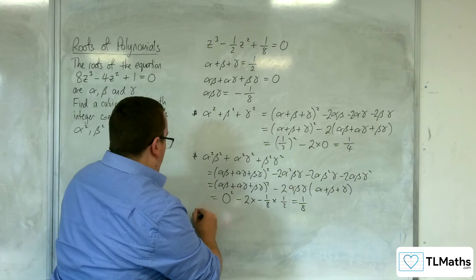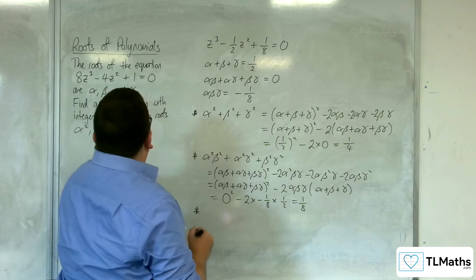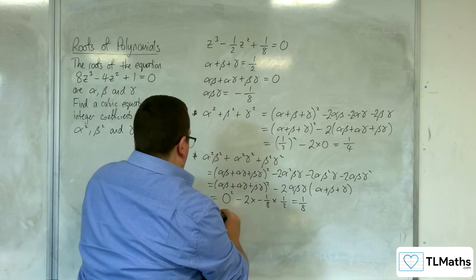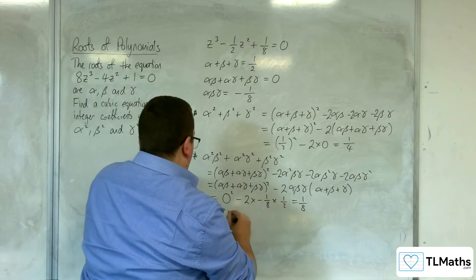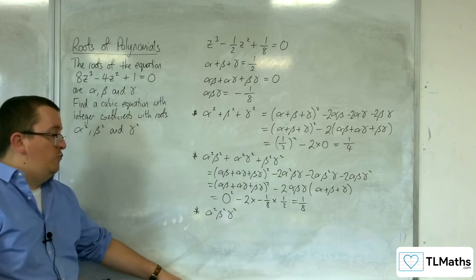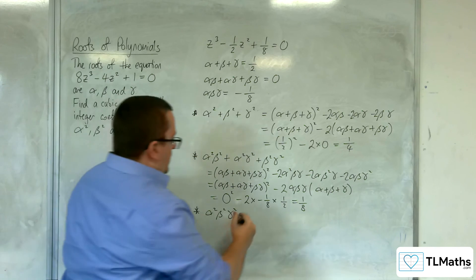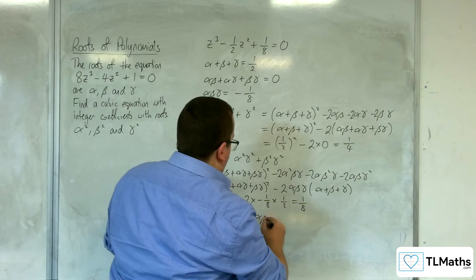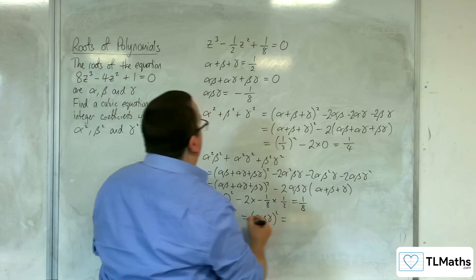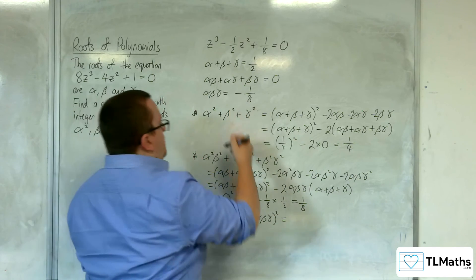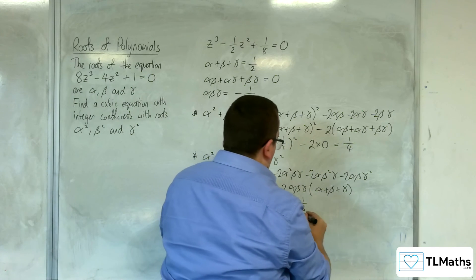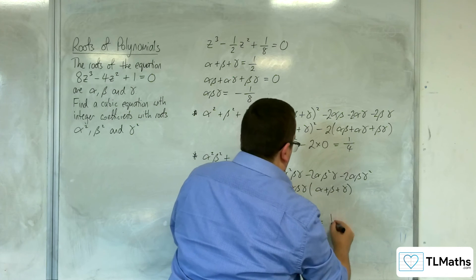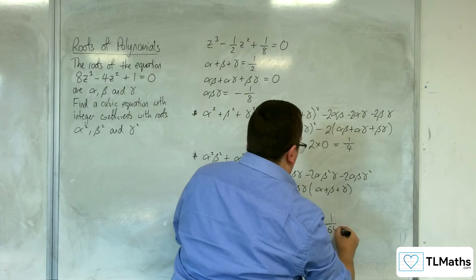Finally, we have alpha squared times beta squared times gamma squared — the product of the three new roots — which is just (alpha beta gamma) squared. That's negative one-eighth squared, which is one over 64.